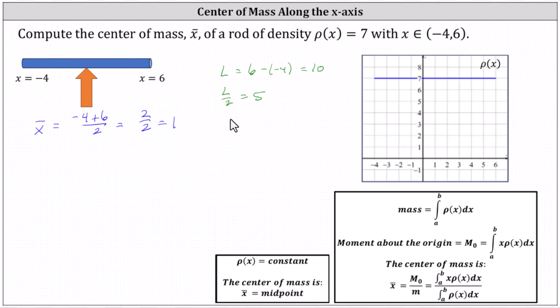We could also determine the center of mass by starting at the left x value of negative four and then adding five, which equals positive one. Either way, we get the same result.